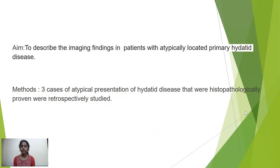The objective is to describe the imaging findings in patients with atypically located primary hydatid disease. Three cases of atypical presentation of hydatid disease that were histopathologically proven were retrospectively studied.